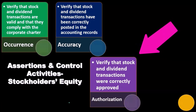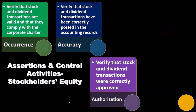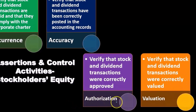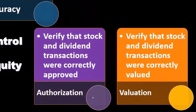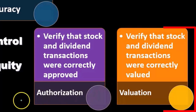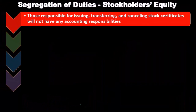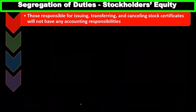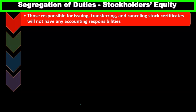The assertion of authorization requires us to verify that stock and dividend transactions were correctly approved — that we went through the proper approval process. Since stock and dividend transactions can be large, major transactions, there should be a formal approval process in place. Then we have the valuation assertion: verify that stock and dividend transactions were correctly valued.